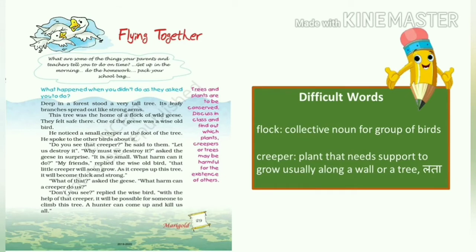Creepers are the weak plants that need support to grow. तो इस tree के नीचे भी एक creeper ग्रो हो रही थी, जो उस tree का support लेकर आगे बढ़ रही थी. तो ये जो old geese था, जब इसने creeper को notice किया, तो उसने क्या करा?